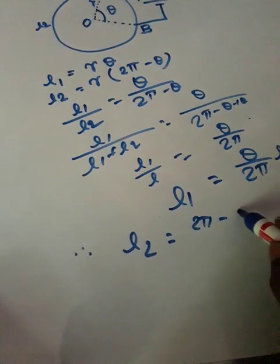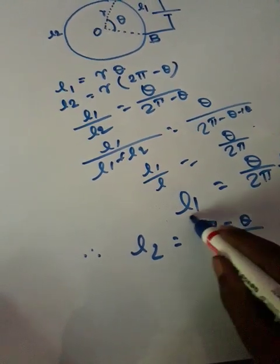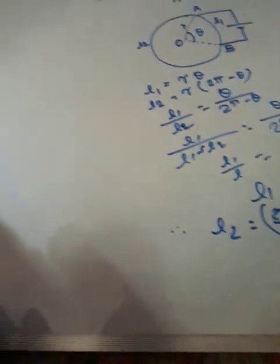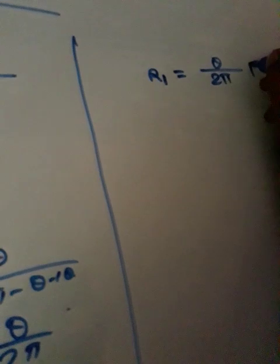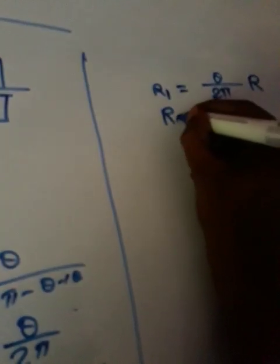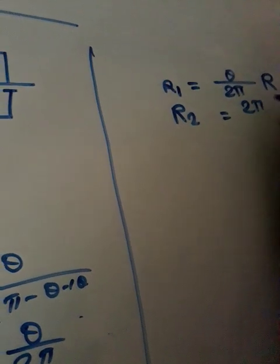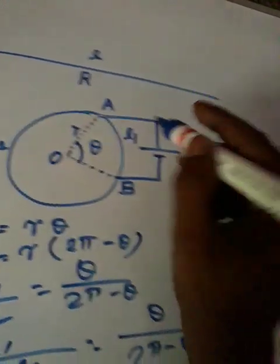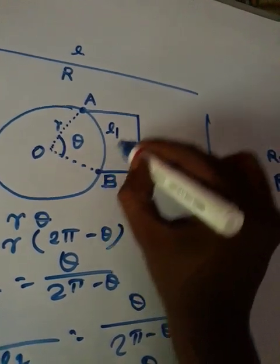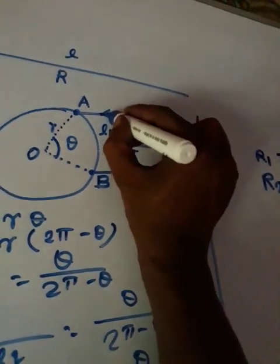Now resistance is proportional to the length of the wire. So r1 is equal to (theta by 2π) into R, and r2 is equal to (2π minus theta) by 2π into R. Now r1 and r2 are in parallel combination because current through this circuit goes to this point and has two paths.